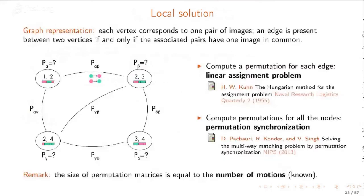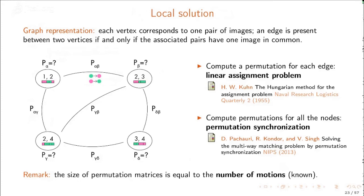To solve the permutation ambiguity via permutation synchronization, we build a graph where each vertex corresponds to one image pair, and an edge exists between two vertices if the associated pairs share one image. First, a permutation matrix is computed for each edge by solving a linear assignment problem. Then permutations associated to all nodes are computed by solving a permutation synchronization problem using the spectral solution. These permutations represent a relabeling of motions in individual pairs to achieve consistency across all pairs, ensuring the same motion has the same label everywhere. The size of the permutation matrices equals the number of motions, which is known by assumption.